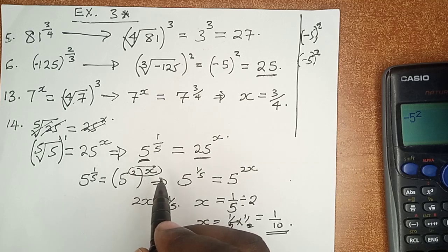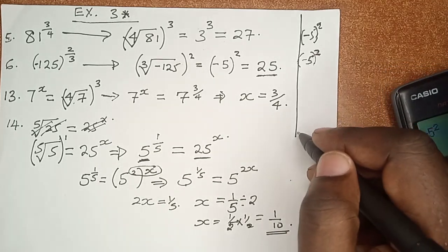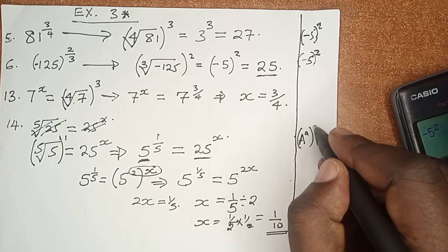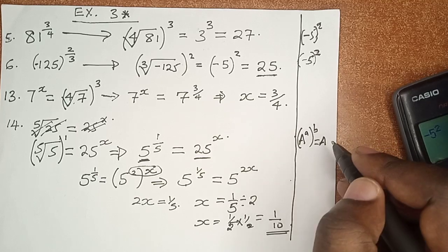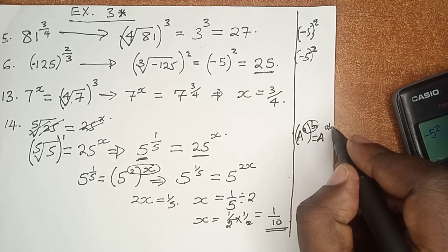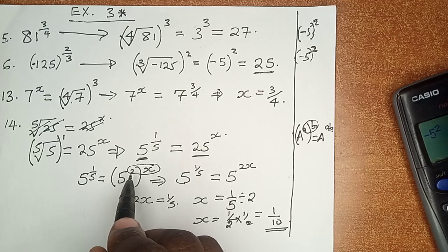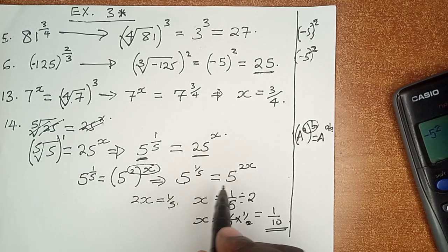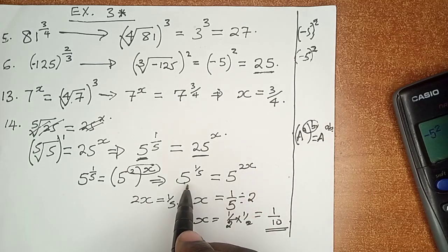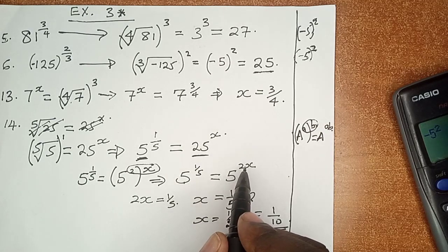And according to what we know, there is another law which states that if a is raised to power a and then everything is raised to power b, this is the same as a raised to power the product of this, which is ab. So when 5 is raised to power 2 and everything is raised to power x, then we have 5 raised to power 2x. And now that the left-hand side is equals to the right-hand side, then the indices must automatically be equal.